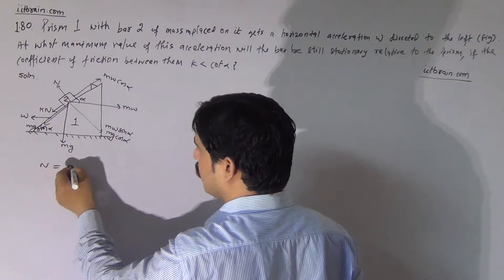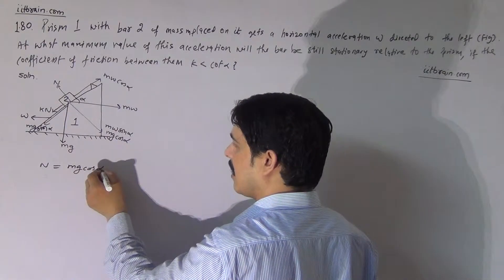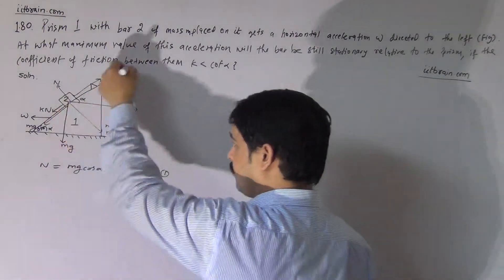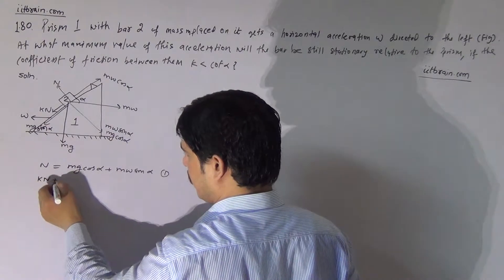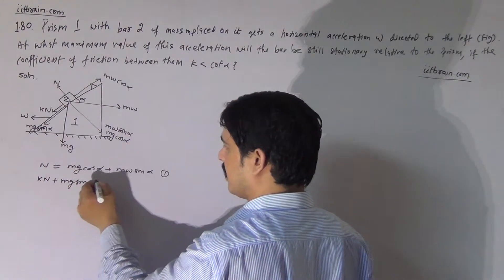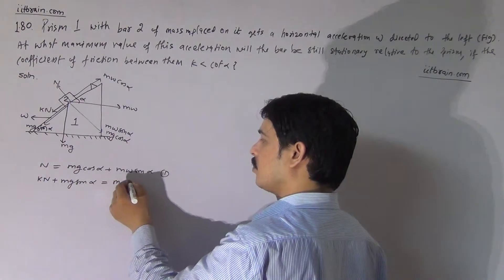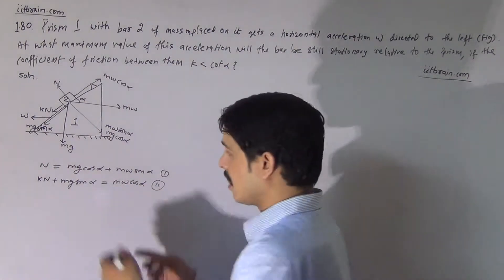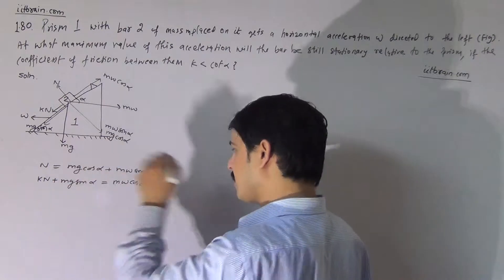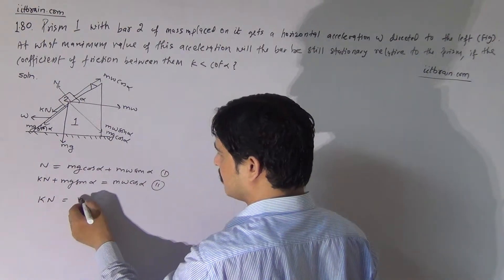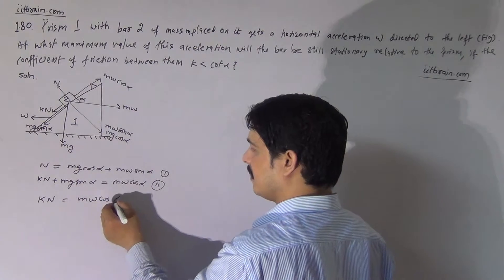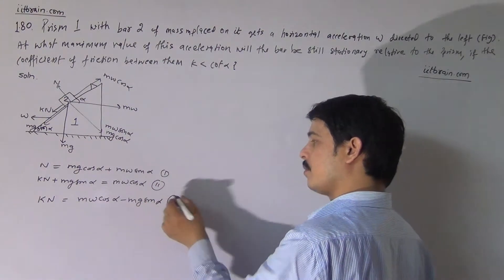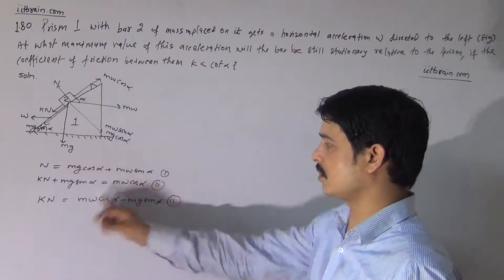The equation perpendicular to the incline is: N = Mg·cos(alpha) + M·W·sin(alpha). Along the incline, the equation is: KN + Mg·sin(alpha) = M·W·cos(alpha), where M·W·cos(alpha) is the upward component. Rearranging the second equation gives: KN = M·W·cos(alpha) − Mg·sin(alpha).